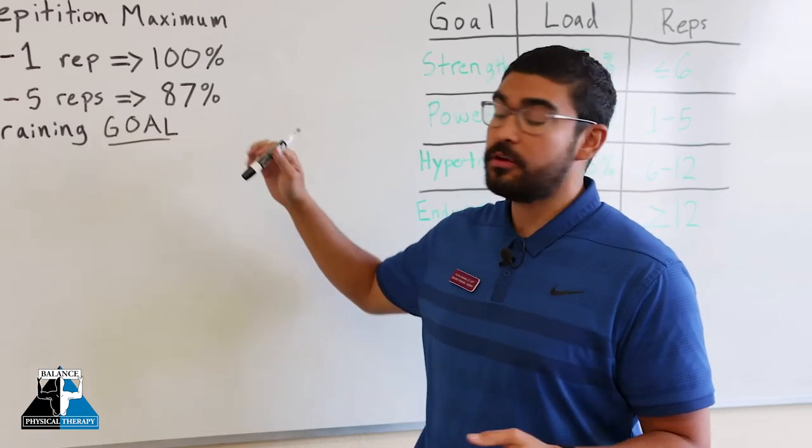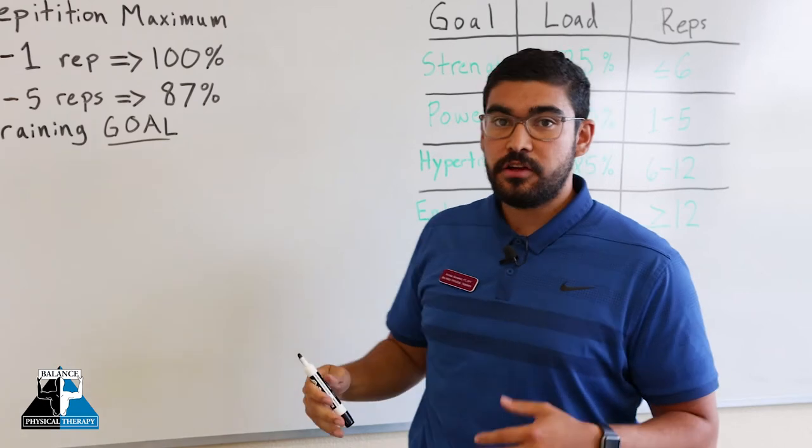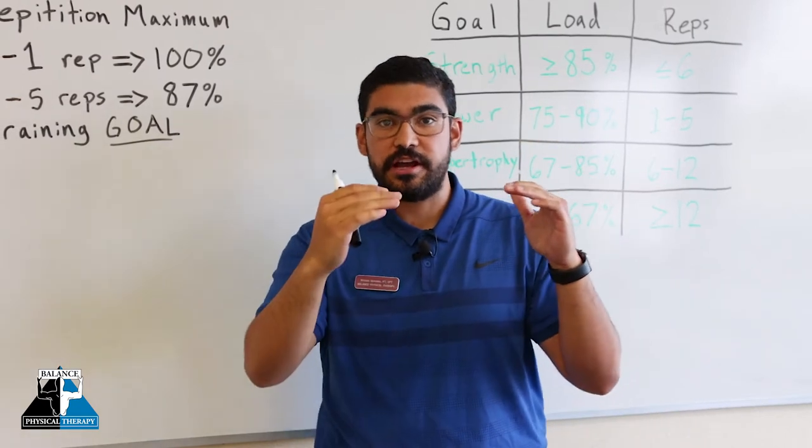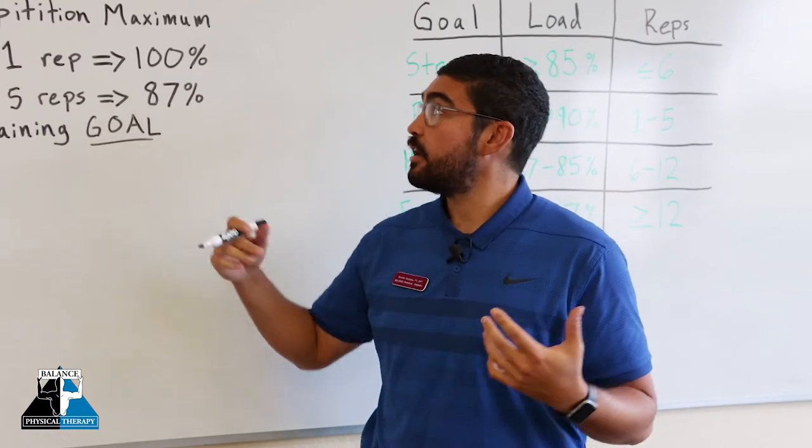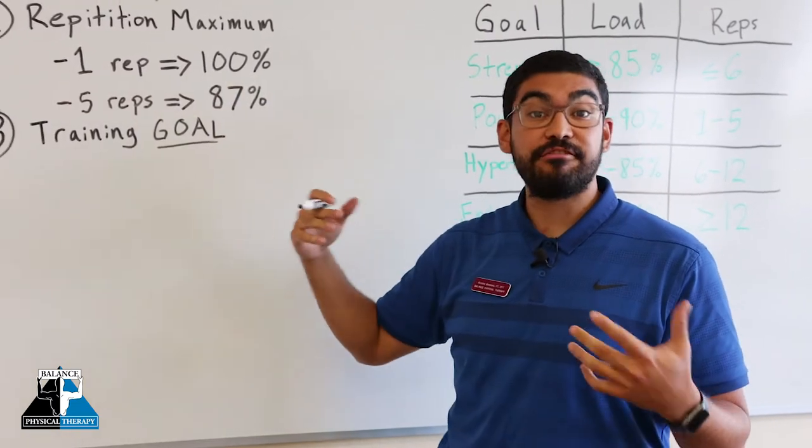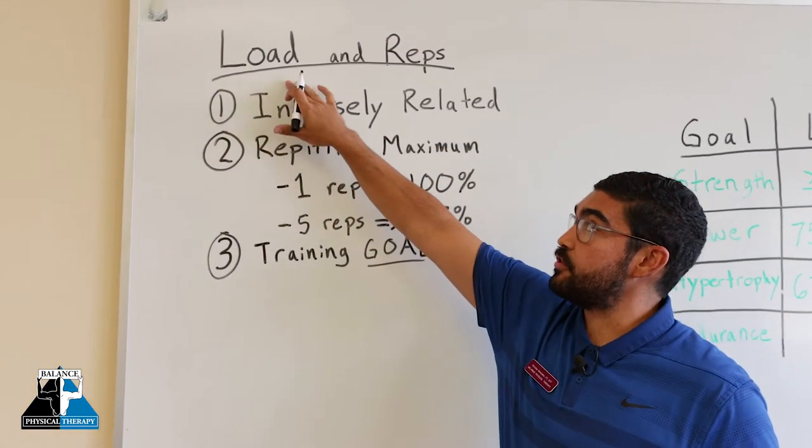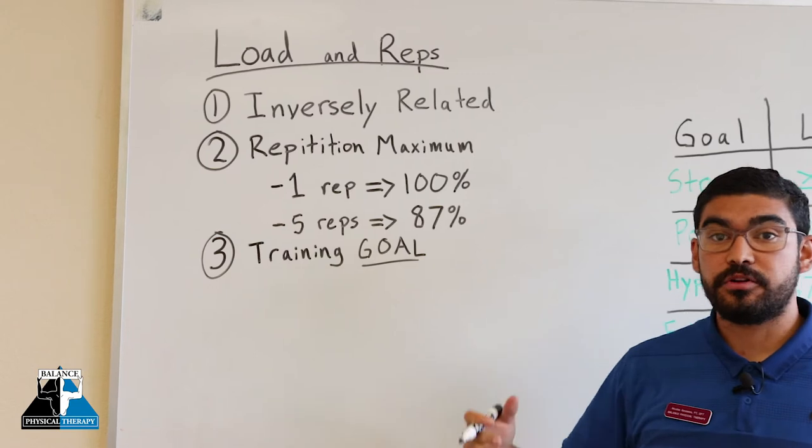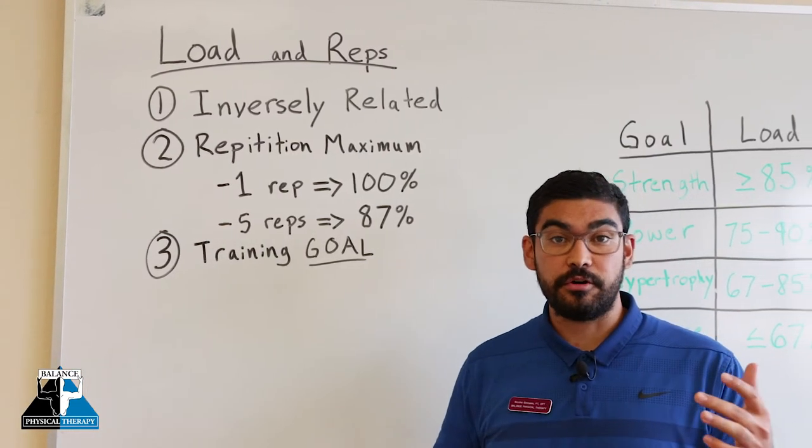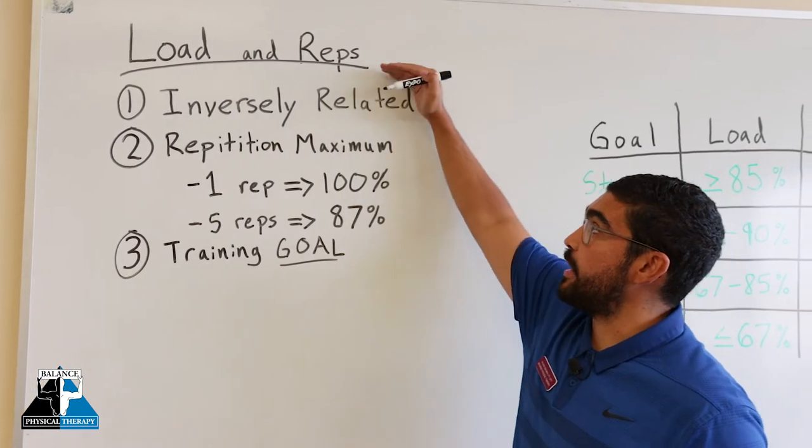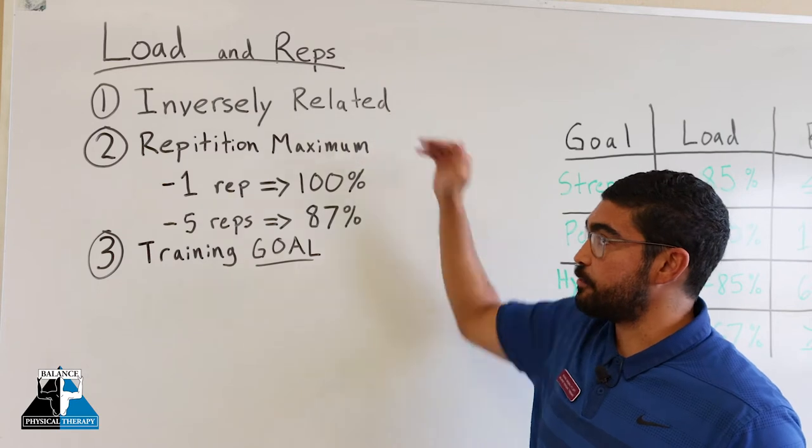The first thing you should know is that load and reps are inversely related. So as one increases, the other subsequently decreases. If I'm wanting to work high repetitions or high volume, we would expect that it's going to be more difficult to do that with a high load. So the load is going to decrease and vice versa. If we're doing a heavy load, we're probably not going to be able to do as many repetitions. That's the first thing we need to know is that it's inversely related.